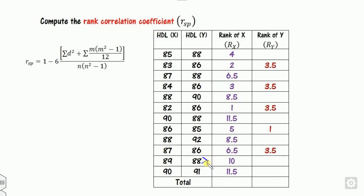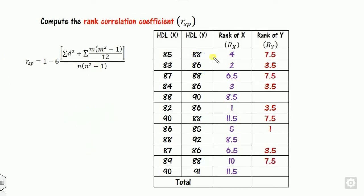After 86, the next value is 87 appearing four times. Five numbers have been placed so far, so 87 occupies positions 6, 7, 8, and 9. Average is (6+7+8+9)/4 = 7.5. Assign 7.5 to each. Then 90 appears one time — with nine numbers already placed, it takes rank 10. The remaining two values take ranks 11 and 12 with no repetition.